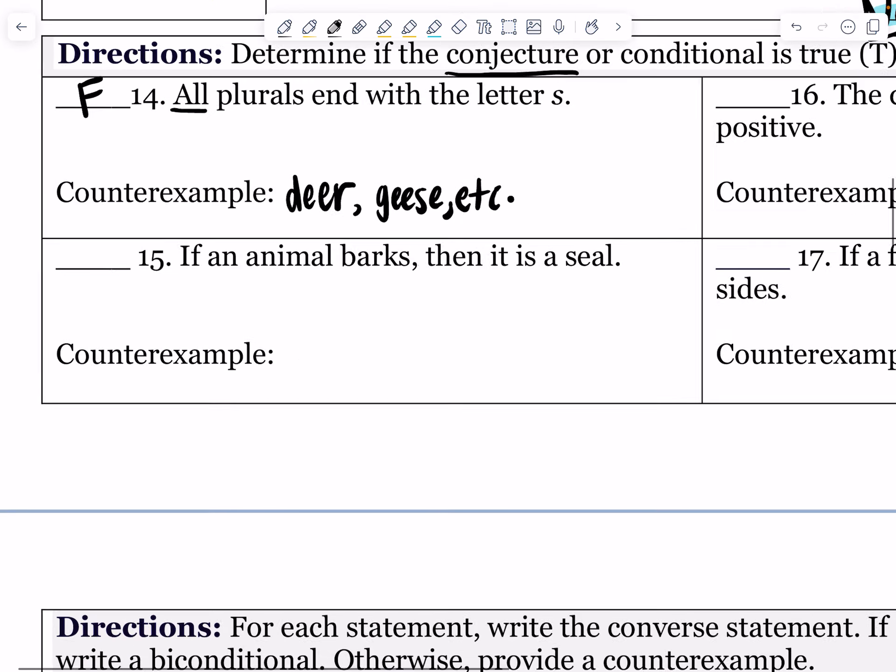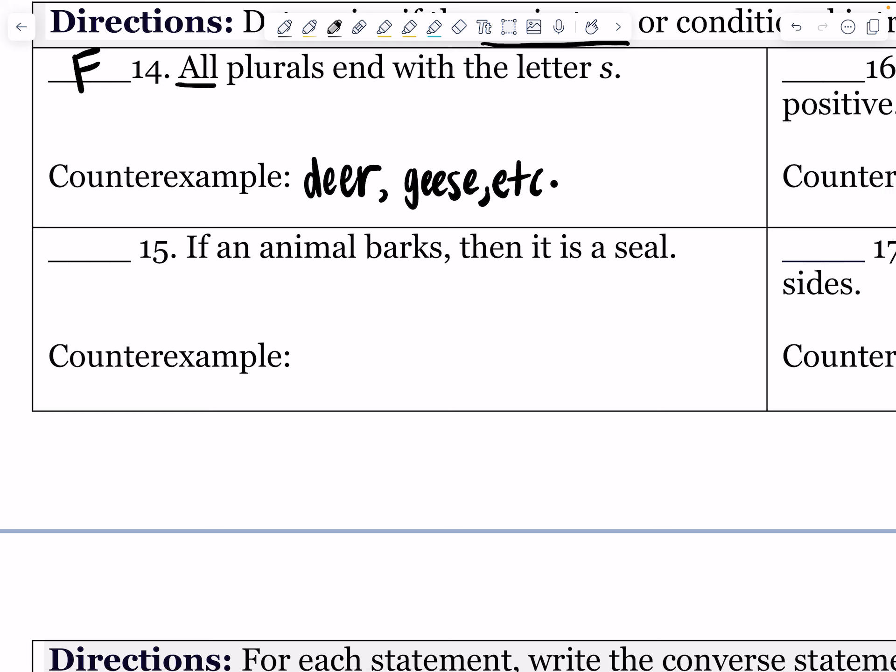Problem 15: If an animal barks, then it is a seal. We immediately know that this is false because what does a dog do? A dog, at least my dog, barks. Seals do bark, but dogs bark as well.